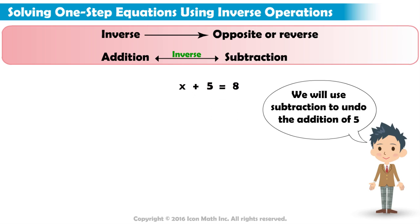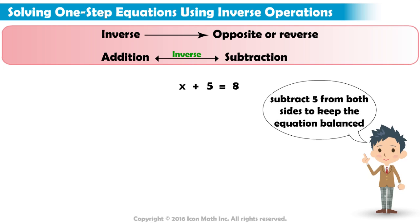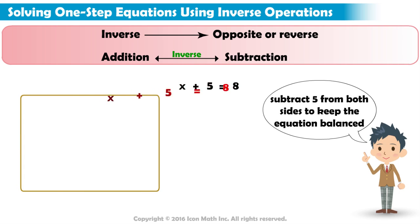To keep the equation balanced, we must subtract 5 from both sides. Once we subtract 5 from both sides of the equation, the resulting equation is x equals 3. This means the value of x that makes this equation true is 3.